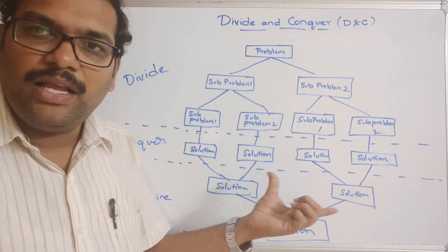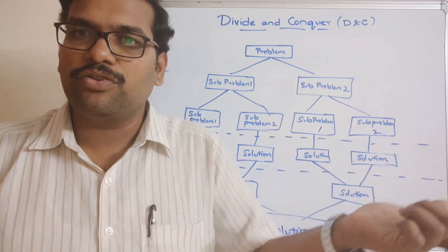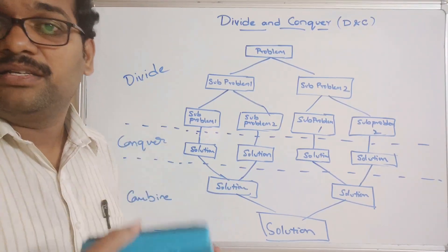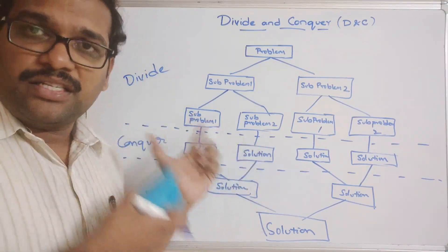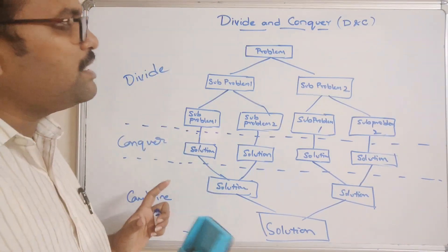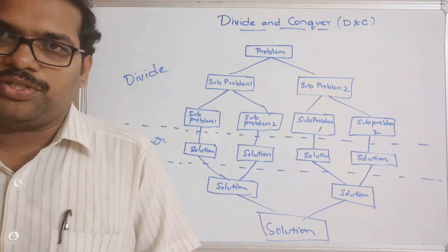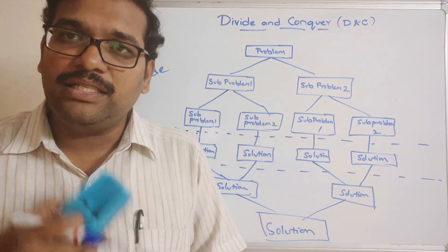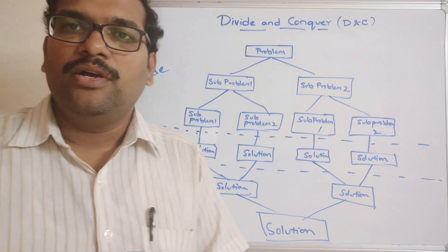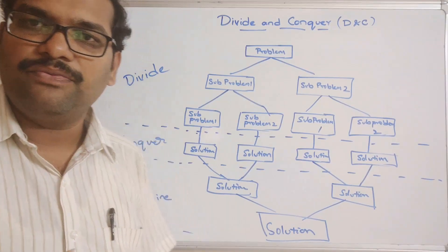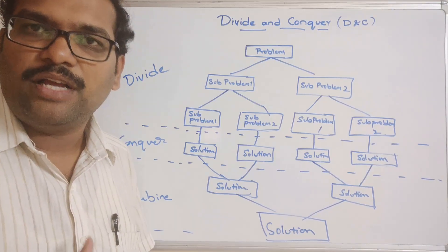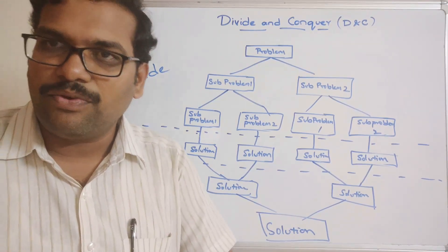The same approach is applied for merge sort, quicksort, Towers of Hanoi, binary search, multiplication methods, and finding minimum and maximum elements. I hope you understood the complete introduction to divide and conquer strategy and how it helps achieve the optimal solution. In further sessions, we will see each application in detail. If you have any doubts, post them in the comment section. If you enjoyed the session, like and share it with your friends, and don't forget to subscribe to our channel. Thanks for watching.